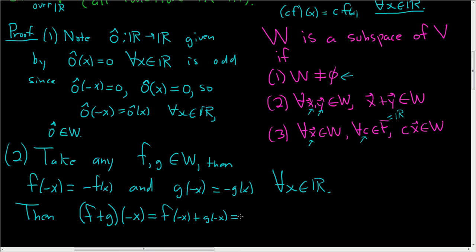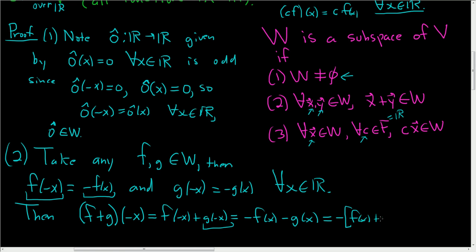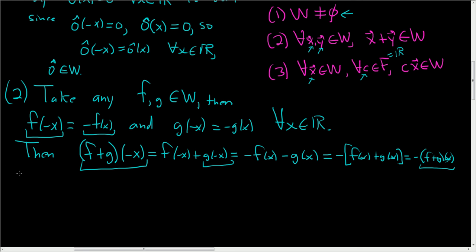Using the fact that both f and g are odd: f of negative x is negative f of x, and g of negative x is negative g of x. So we get negative f of x plus negative g of x, which factors to negative times the quantity f of x plus g of x. By definition of function addition, this equals negative f plus g of x. So f plus g of negative x equals negative f plus g of x, for all x in ℝ. That means f plus g is an odd function and therefore in W — so W is closed under vector addition.